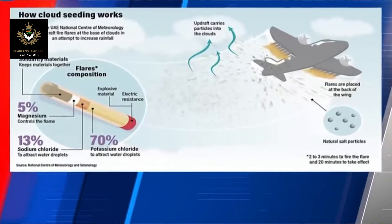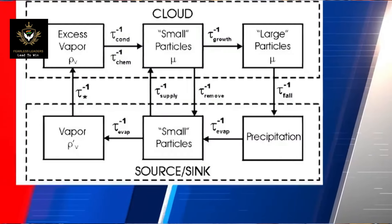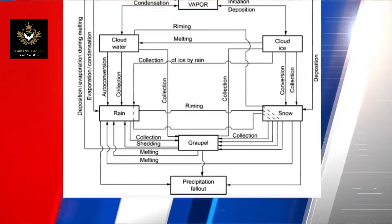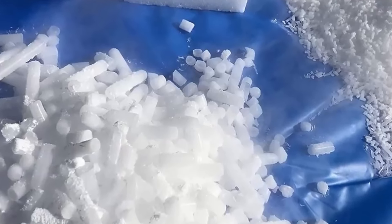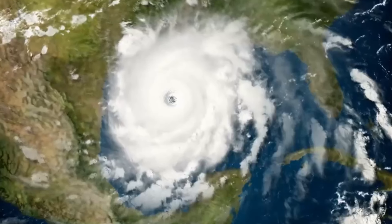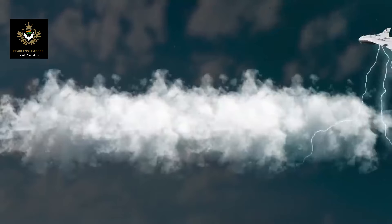The most common chemicals used for cloud seeding are silver iodide, potassium iodide, and solid carbon dioxide — that is dry ice. Liquid propane, which expands into gas, has also been used and can produce ice crystals at higher temperatures than silver iodide. After promising research, the use of hygroscopic materials such as table salt is also becoming popular. Basically, we need an agent to accumulate water vapors onto these particles so that they become heavy as water droplets and fall towards the earth.